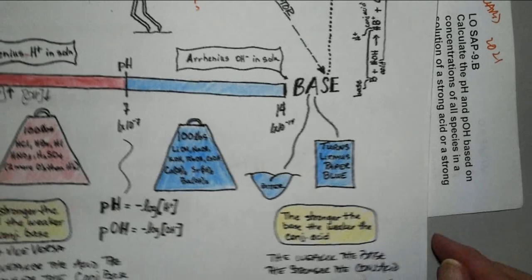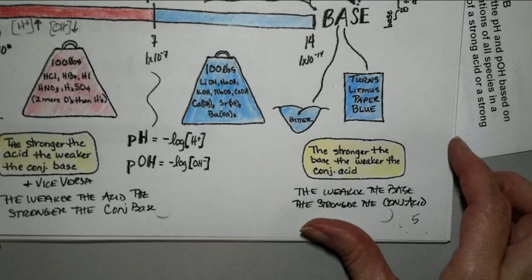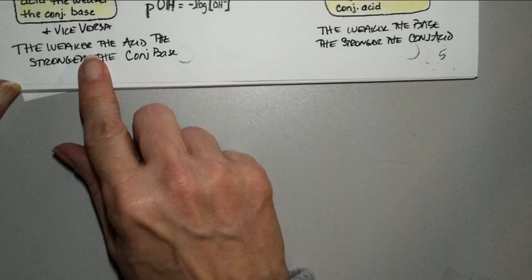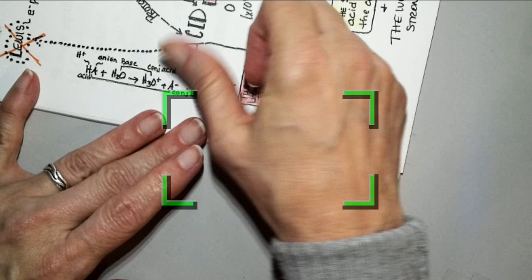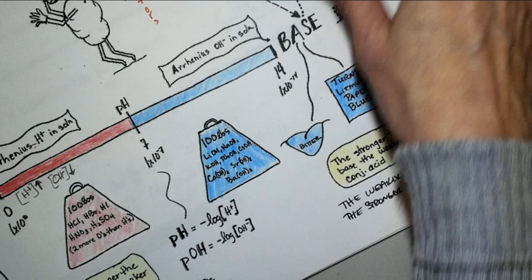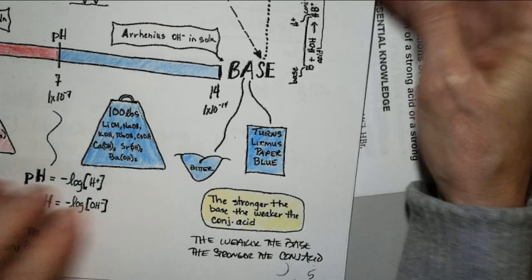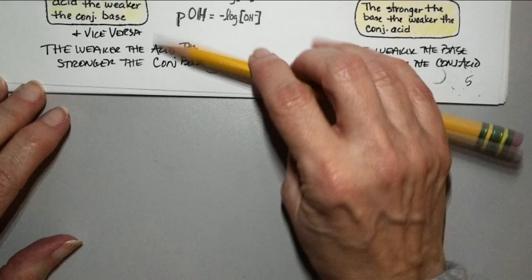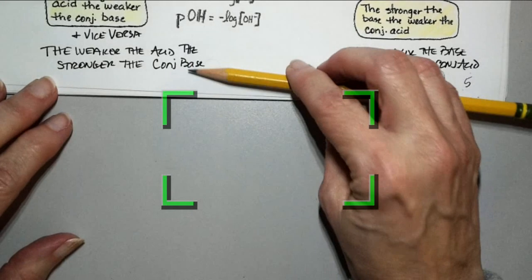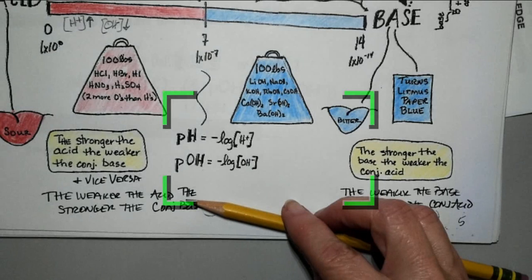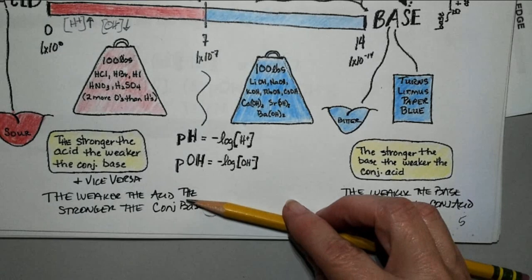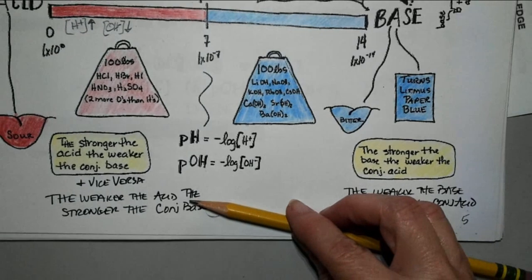Down here on the bottom, we talked about conjugate acids and conjugate bases. If you look on either end, it talks about the conjugate acid and base. The weaker the acid, the stronger the conjugate base. That's going to be really important for determining, when you put an acid and a base together, what the pH of your final solution is going to be.